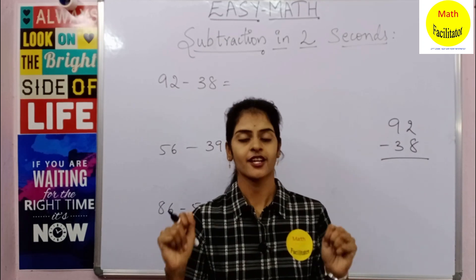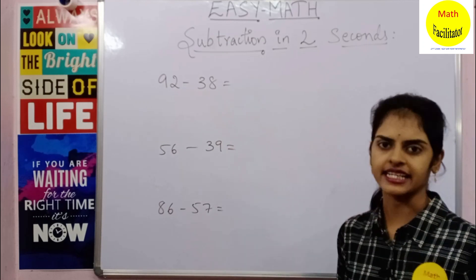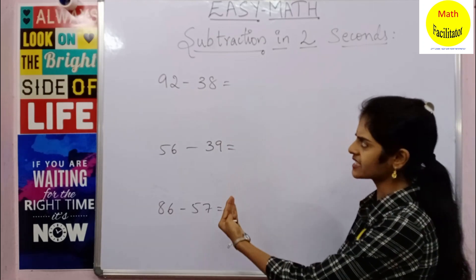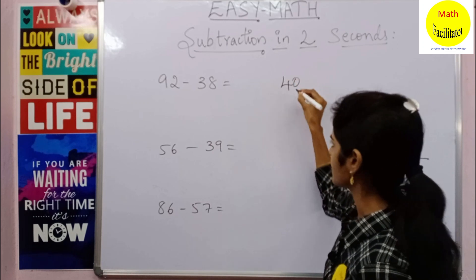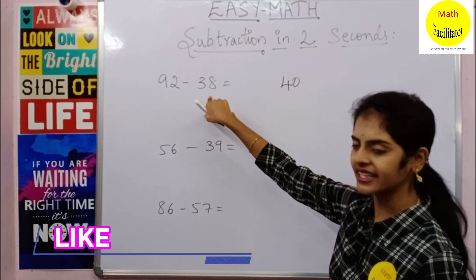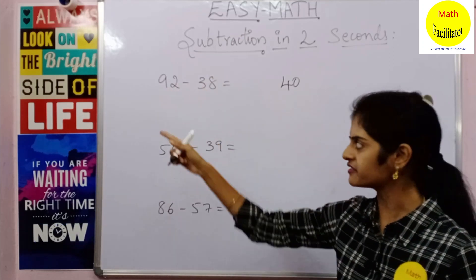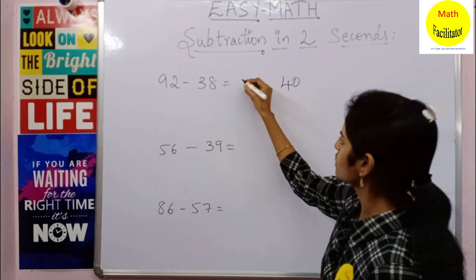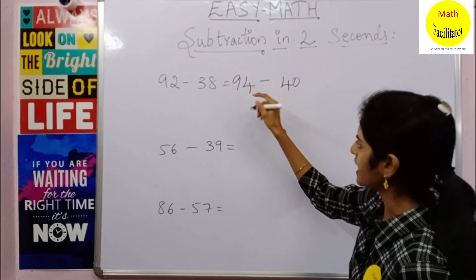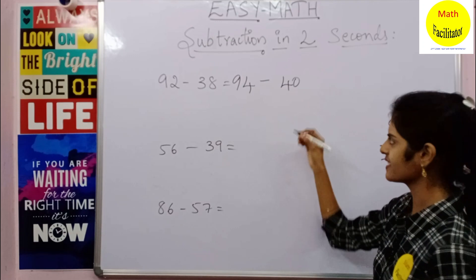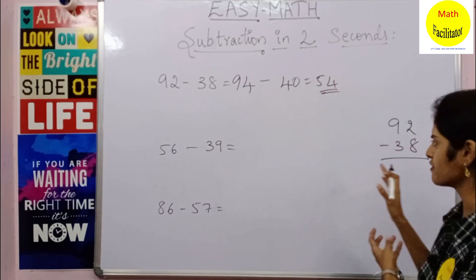92 minus 38. As we all know, 38 is closer to 40, so I want to write 38 as 40. That means I'm adding 2 here. In the same way, you'll add 2 in the first number also. So 92 becomes 94 if you add 2. Now 94 minus 40 is nothing but 54. Very simple, you don't have to borrow, you don't have to do anything.